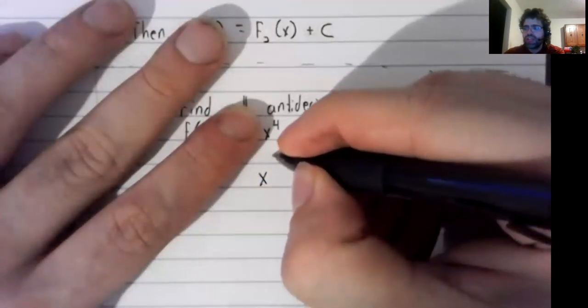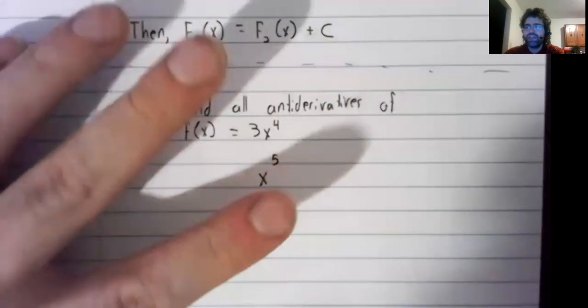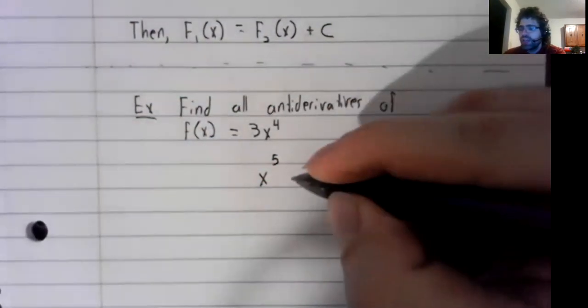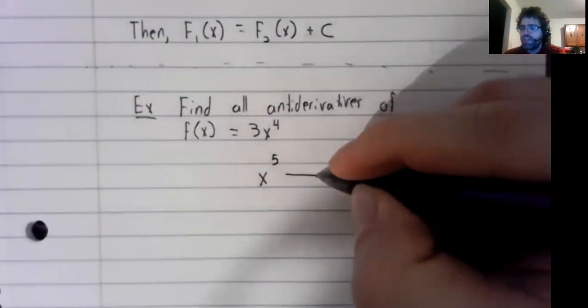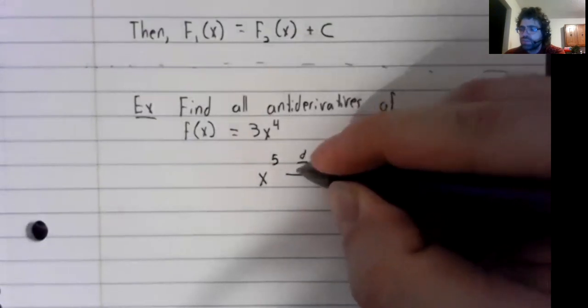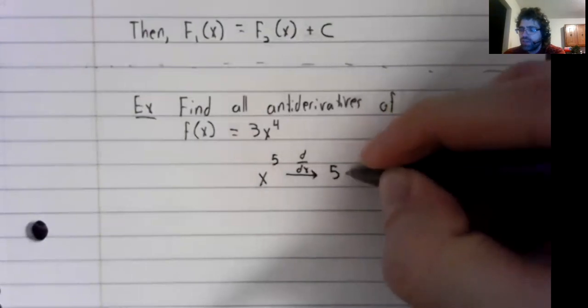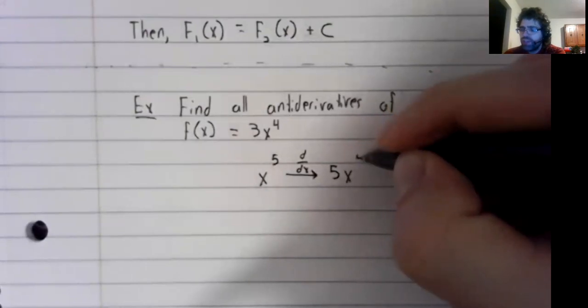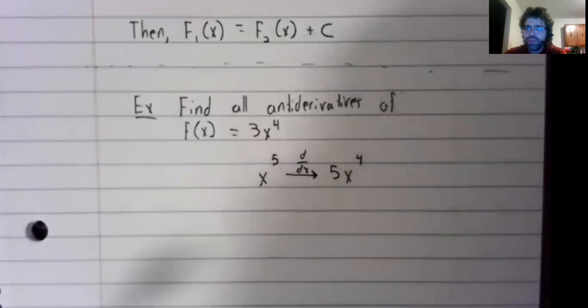You could have x to the fifth. If you take the derivative of x to the fifth, you get 5x to the fourth.